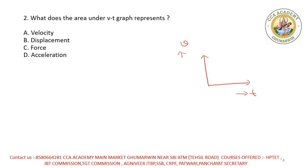Maan lo hum ne kiya — t1 time pe jo velocity ho usko v1 bola, aur t2 time pe jo velocity ho usko v2 bola. Toh area under velocity-time graph jo hai, woh represent karta hai option B — displacement ko.